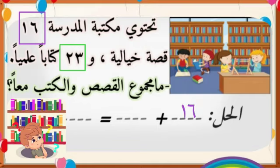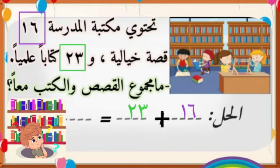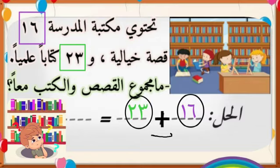ثانياً، ما عدد الكتب العلمية في مكتبة المدرسة؟ جيد، ثلاثة وعشرون كتاباً. ثالثاً، ما العملية الحسابية اللازم إجراؤها لمعرفة مجموع الكتب والقصص معاً؟ أحسنتم، عملية الجمع. علينا أن نحسب: ستة عشر زائد ثلاثة وعشرون.